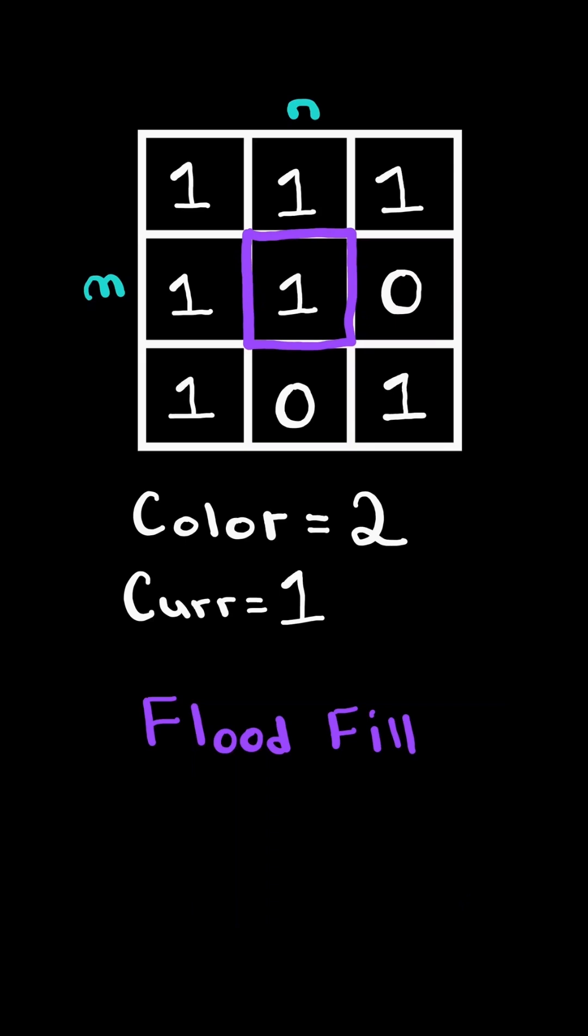Flood fill. Given an mxn matrix of pixels and a starting position, in this case we're starting in the middle, and we're also given a color, consider the current color we are on. We must perform a flood fill.